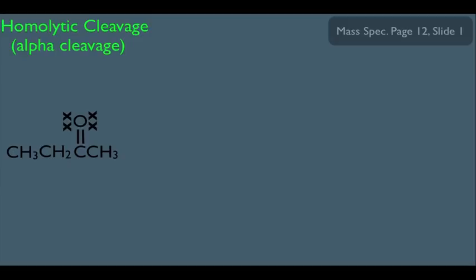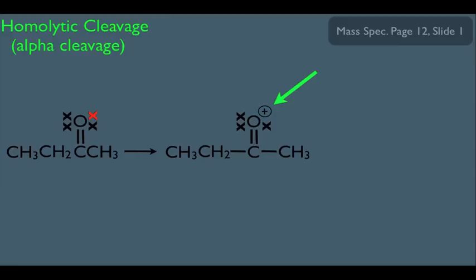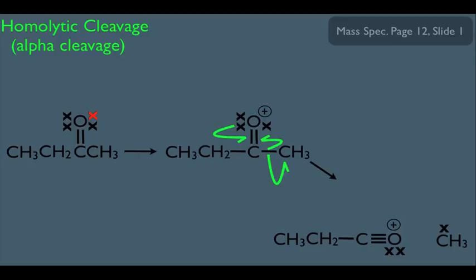Now let's look at another example of alpha cleavage, but this time with a ketone. Make sure you see the analogous moves here. It starts off with the electron beam dislodging an electron, in this case on the oxygen, and that gives rise to this molecular ion. Notice we got our positive charge right here, which is going to influence this particular electron movement. What you would end up with from these electron moves is two structures. The one that would be detected by the mass spec is the charged one, so we should expect to see a peak at 57 if this particular type of fragmentation takes place.